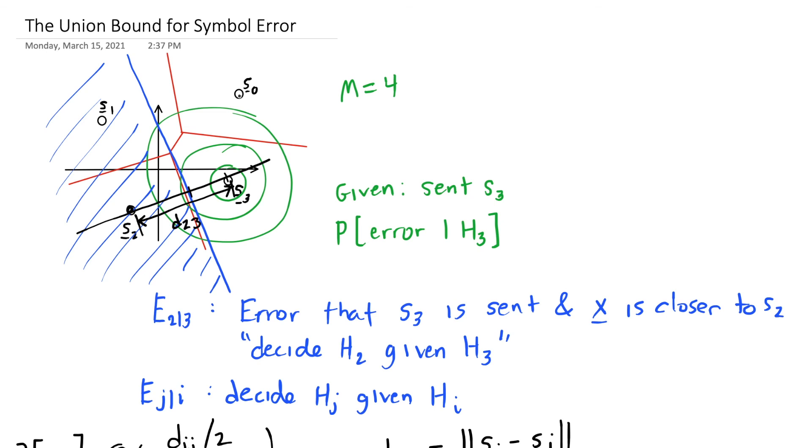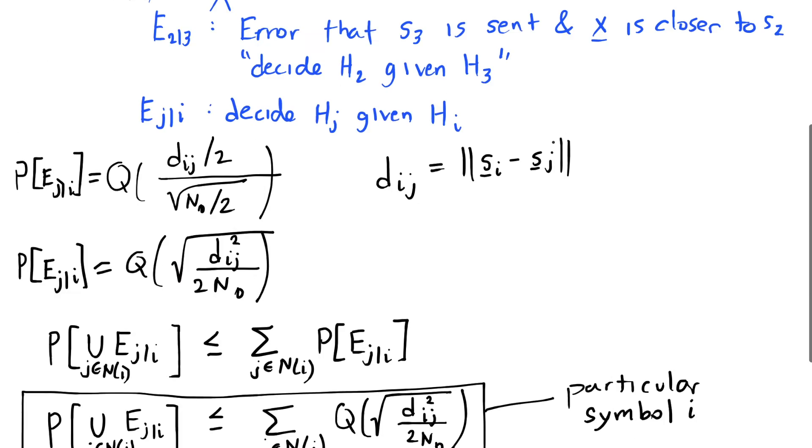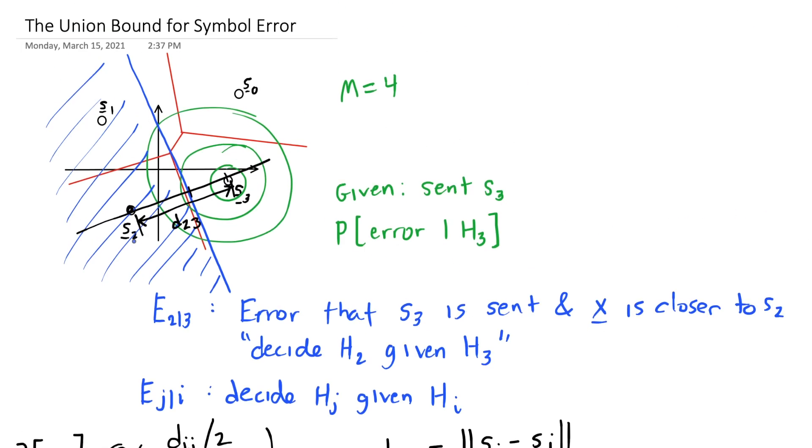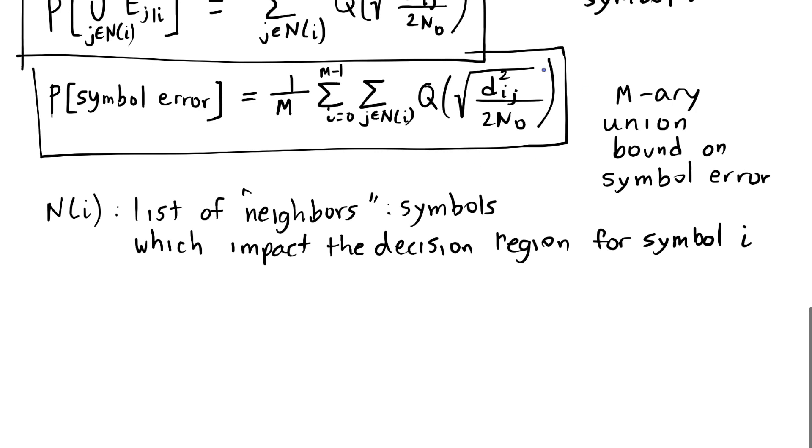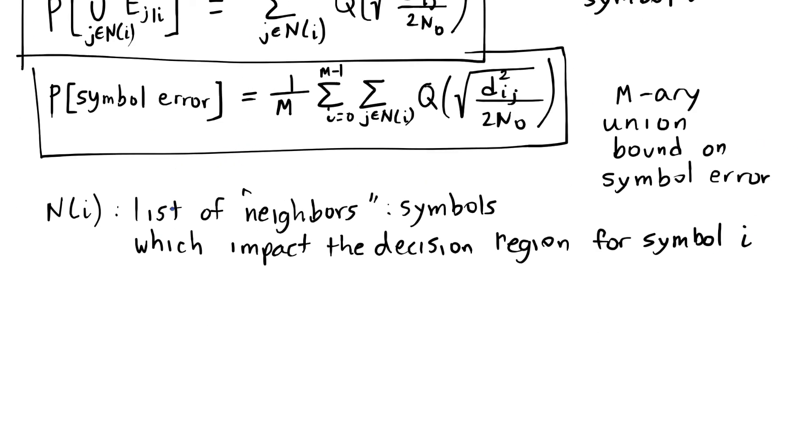S2 and S0 are not neighbors because this line, the perpendicular bisector of S2 and S0, doesn't affect the decision region for S2 or S0. It falls in between these decision regions for S1 and S3 and thus doesn't change the shape of the decision region for either one. Once we have that list of neighbors, those are the error events we're going to sum over. For example, for S3, we're talking about the union of that with this area E1 given 3 and the union of that area with S0 given 3. These three error events would contribute to the union bound expression for the probability of error given S3, exactly determined by which are the neighboring symbols.